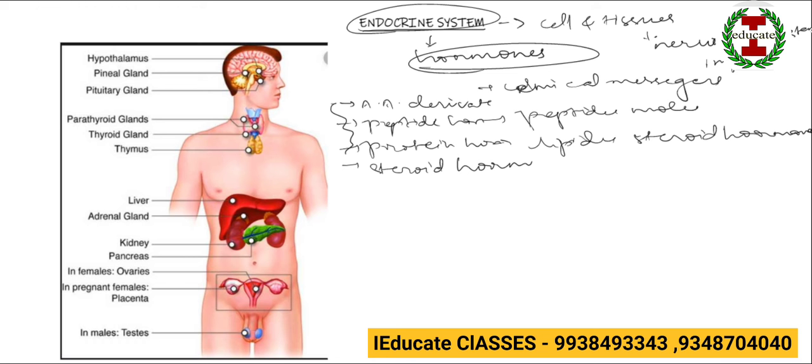Now there are various endocrine glands in our bodies which produce these different types of hormones. Starting with the hypothalamus, then comes pituitary, then the pineal gland, then parathyroid, thyroid, thymus, liver, adrenal gland above the kidneys, kidneys and pancreas which acts as a mixed endocrine gland. Moving on to the gonads: in females ovaries, in males it is testes. Apart from that, during pregnancy in females, placenta also plays a major role in production of hormones.